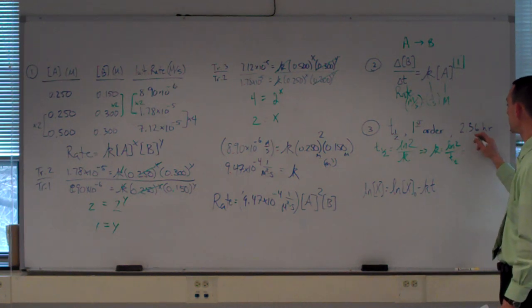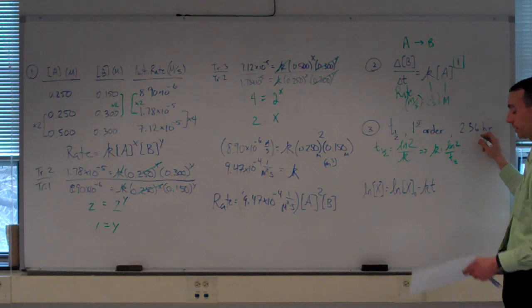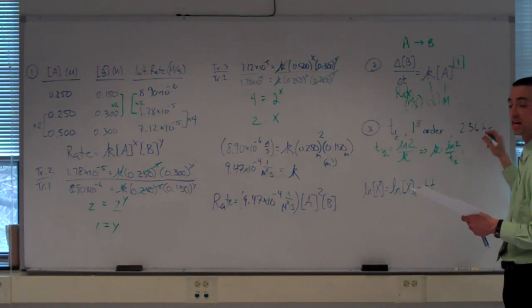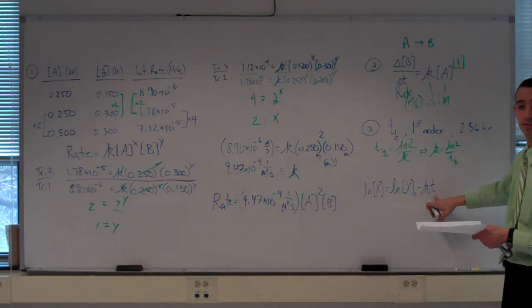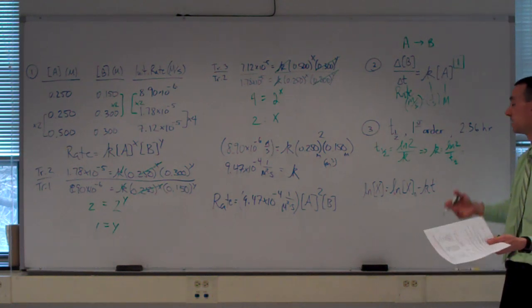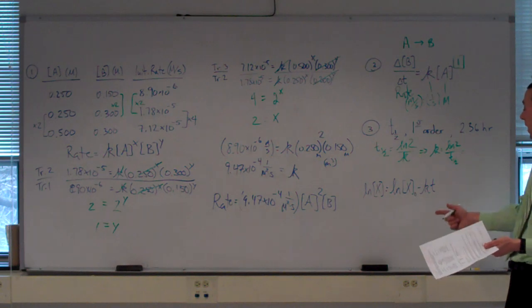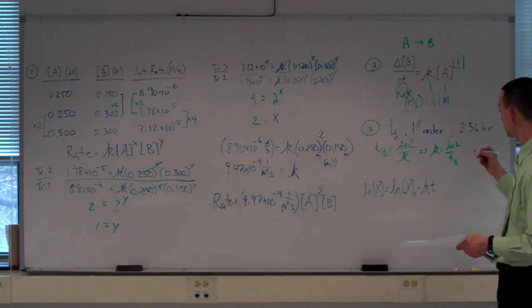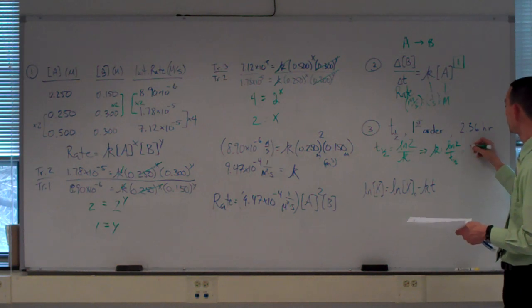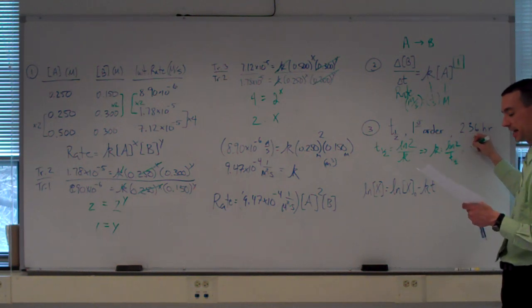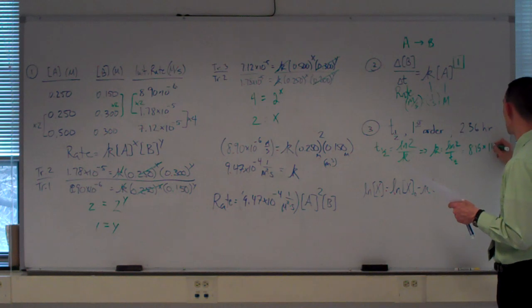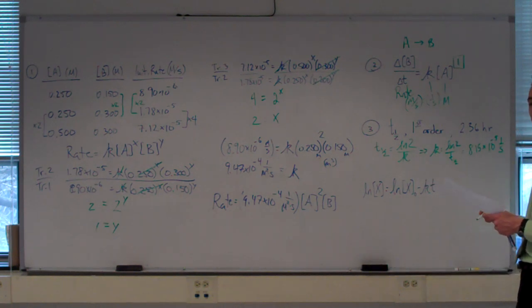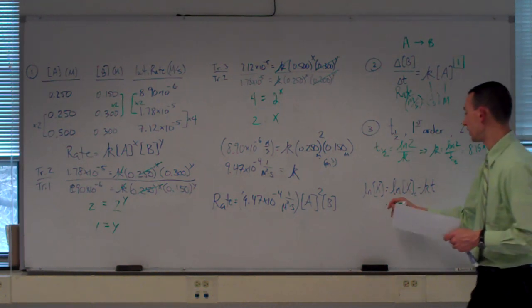When I take ln of 2 divided by, now I'm going to convert this 2.36 hours into seconds. I'm doing that now because later on my time is also in seconds, so somewhere a conversion's got to be done. So the ln of 2 divided by the half life in seconds gives us a K of 8.15 times 10 to the negative 5, that's 1 over seconds as its units. I can now bring that number down here and solve for my concentration.